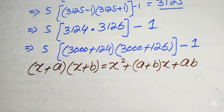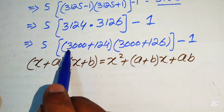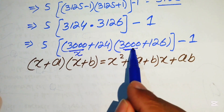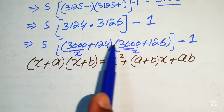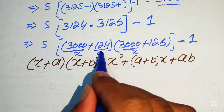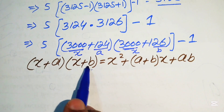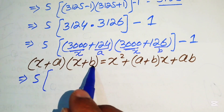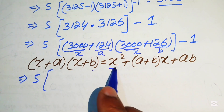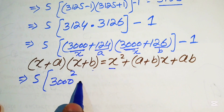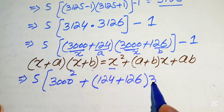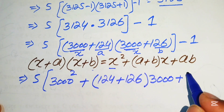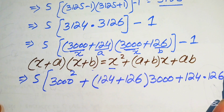Applying this formula, x is 3000, a is 124, and b is 126. Note that the two x values must be the same to apply the formula. The result is: x squared, which is 3000 squared, plus a plus b, which is 124 plus 126, times x which is 3000, plus a times b which is 124 multiplied by 126, and then minus 1.